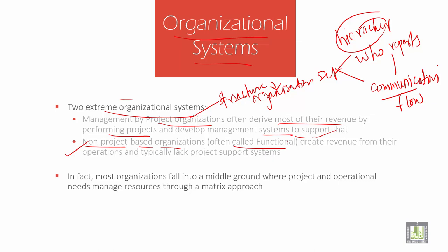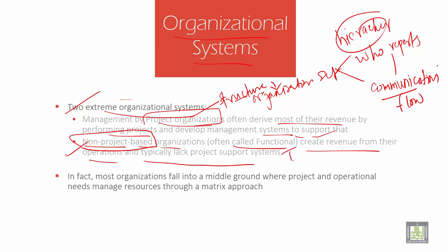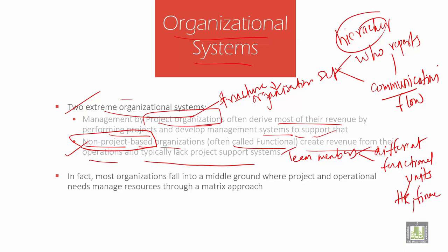Project-based organization is often called functional. It creates revenue from operations but typically lacks a project support system. There are two extreme groups: management by project organization and non-project based organization. The non-project based, or functional, creates a structure based on team members allocated from different functional units of the organization.